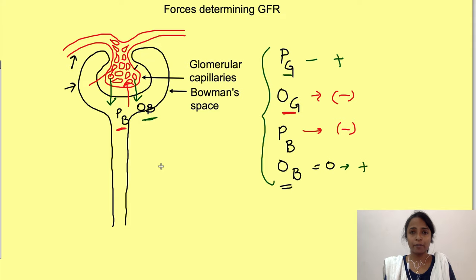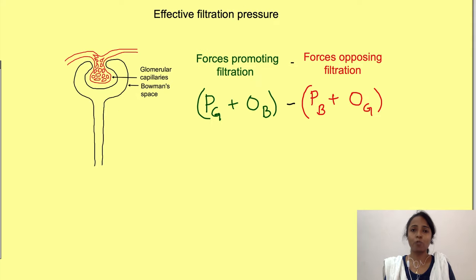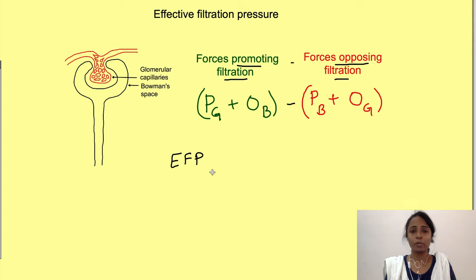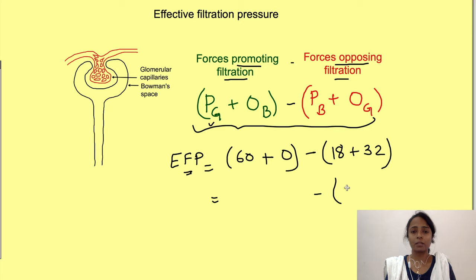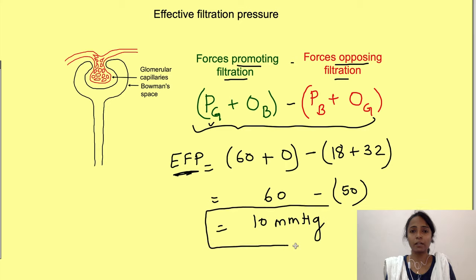How much is the net driving force? By subtracting forces opposing filtration from those promoting filtration, we get the effective filtration pressure (EFP). The hydrostatic pressure in the capillaries is 60 mmHg; oncotic pressure in the tubules is zero; hydrostatic pressure in the tubules is 18 mmHg; and oncotic pressure in the capillaries is 32 mmHg. So 18 plus 32 equals 50 mmHg opposing, and 60 minus 50 equals 10 mmHg. The effective filtration pressure is 10 mmHg.